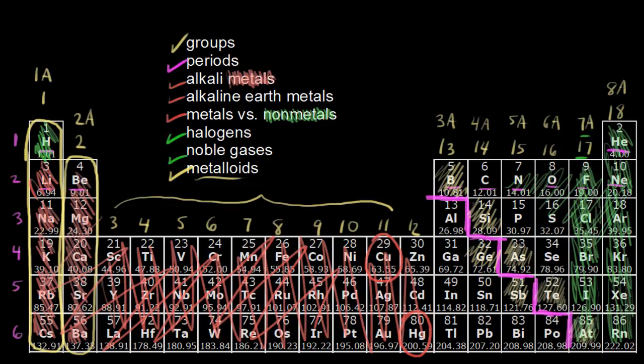So silicon is a semiconductor. So it's a metalloid, so it's like a metal, so it does conduct electricity, but not to the same extent that a metal would. And so these intermediate properties are sometimes useful. And so let's go ahead and mark some of the rest of these.